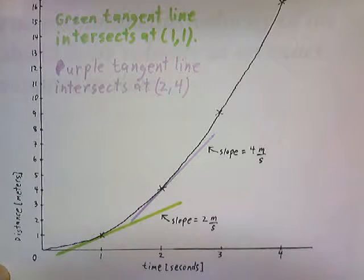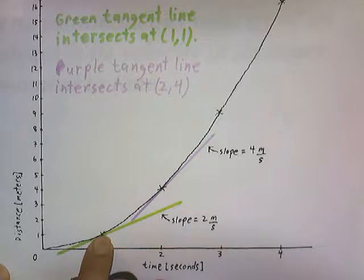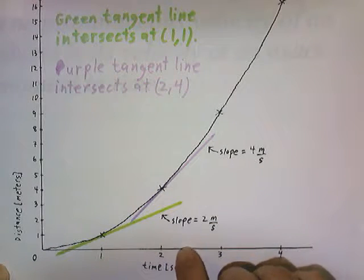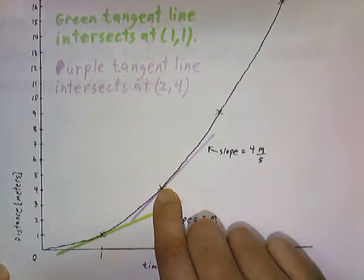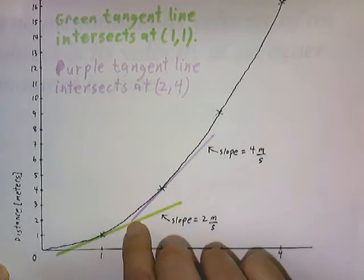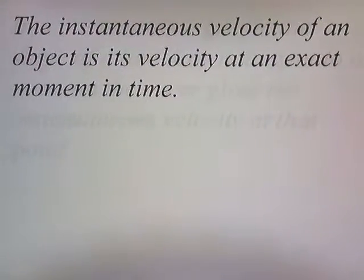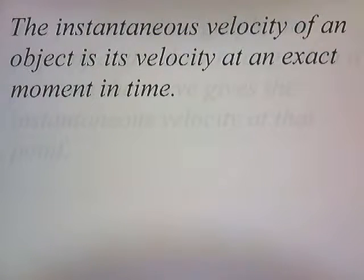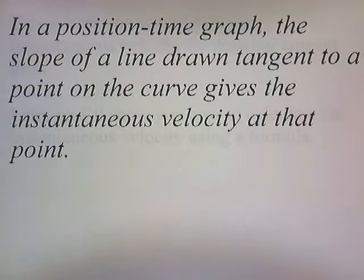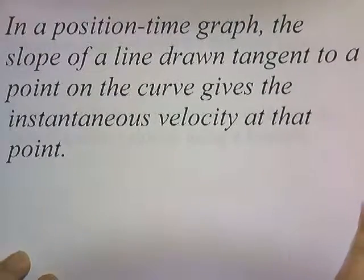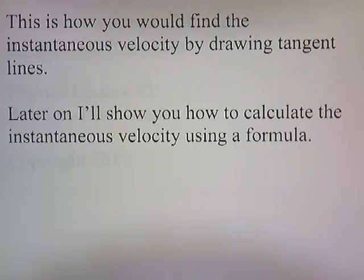At exactly 1 second, the car is moving at 2 meters per second because the slope of the tangent line through that point is 2. Likewise, at exactly 2 seconds, the car is moving at 4 meters per second because the slope of the tangent line through that point is 4. The instantaneous velocity of an object is its velocity at an exact moment of time. In a position-time graph, the slope of the line drawn tangent to a point on the curve gives the instantaneous velocity at that point. Later, I'll show you how to calculate instantaneous velocity using a formula.